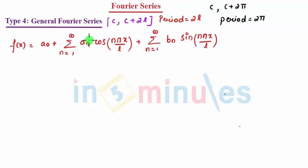So your a0 comes to be 1 upon 2L, integral from C to C plus 2L of f(x) dx.